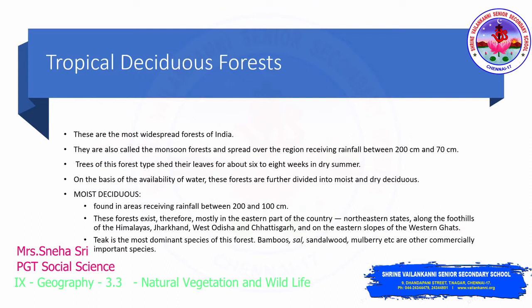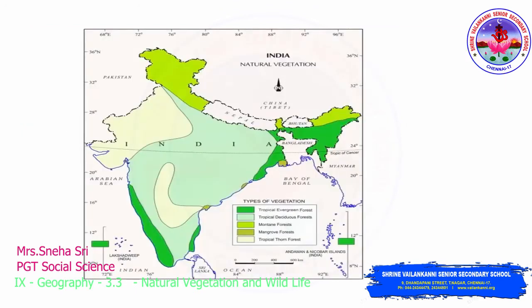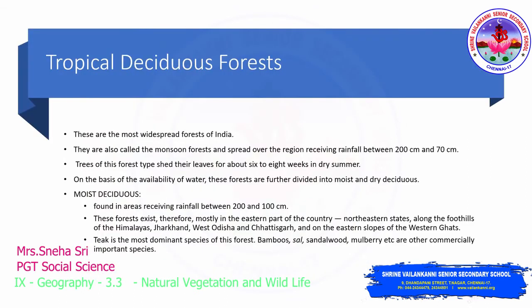Tropical deciduous forests are the most widespread forests in India. As you can see on the image, the pale green regions denote the tropical deciduous forests, found mostly in many states of India. They are also called the monsoon forests and spread over regions which receive rainfall between 70 cm and 200 cm. In this type of vegetation, the trees shed their leaves for about 6 to 8 weeks in dry summer. Based on the availability of water, the forest can be divided into two: moist deciduous and dry deciduous.